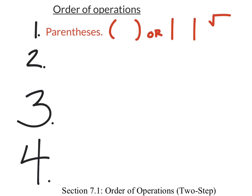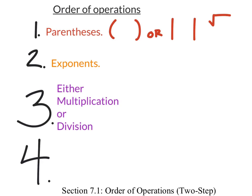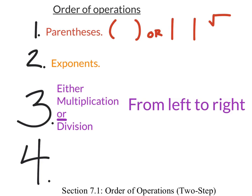After parentheses, we have exponents. If we remember that exponents are repeated multiplication, it will help us understand what comes next. After exponents, you would do either multiplication or division. This 'or' is a big deal — a lot of people think multiplication always comes first, but that is not true. Division can come first, and it's dependent on the condition of left to right. We scan the problem searching for either multiplication or division.